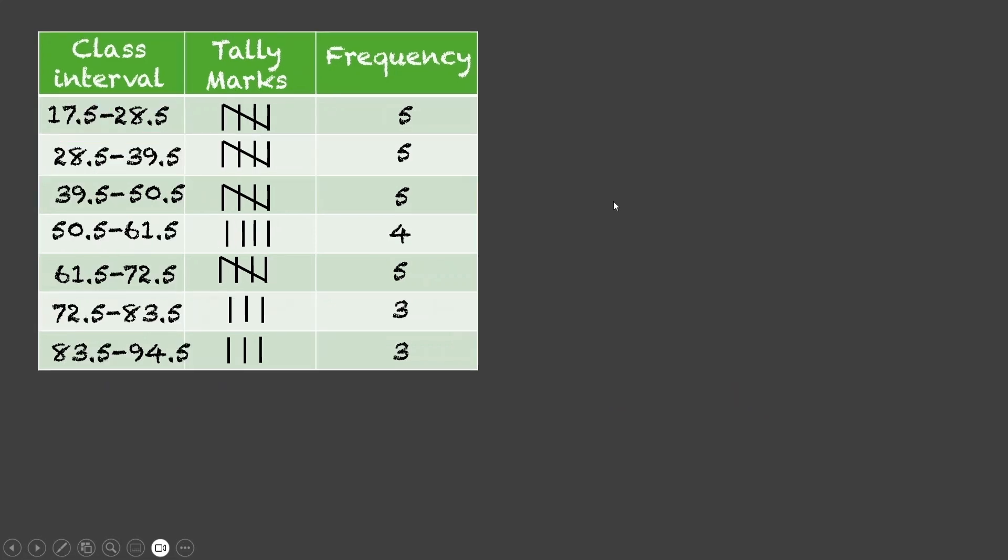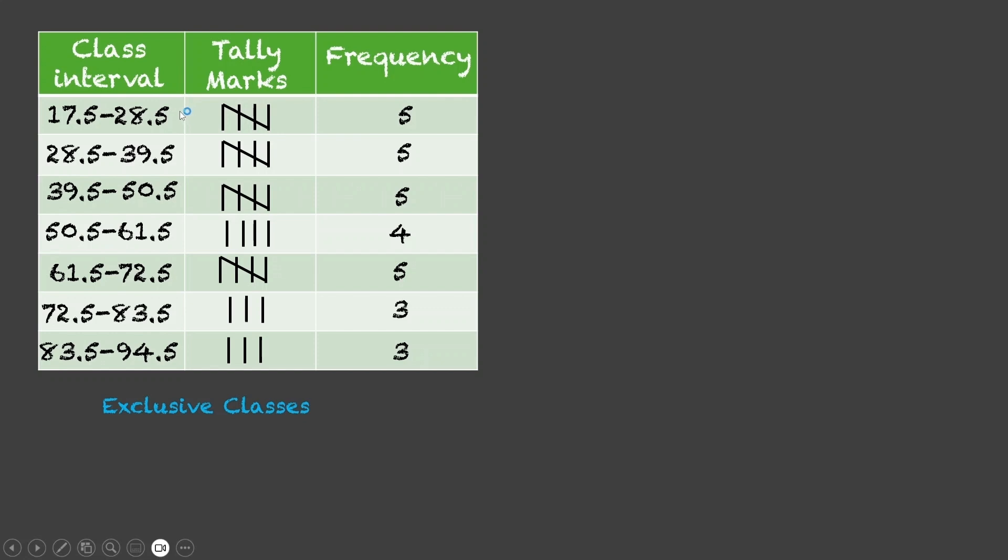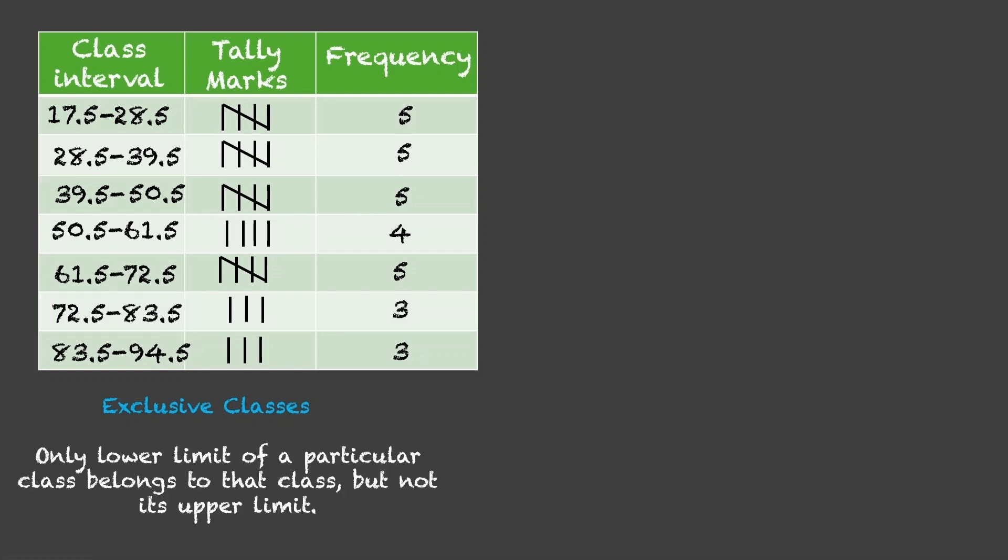These classes are non-overlapping and also called exclusive classes. But, there's still a problem over here. What should we do in case there is an observation 28.5 in the data set? Should it go to this class or this class? By convention, it always goes to the higher class interval. So, 28.5 would go to this class interval. Similarly, if we have a data point which is 72.5, it will go in the higher class interval, 72.5 to 83.5. For exclusive classes, only lower limit of a particular class belongs to that class but not its upper limit and therefore the name exclusive classes.